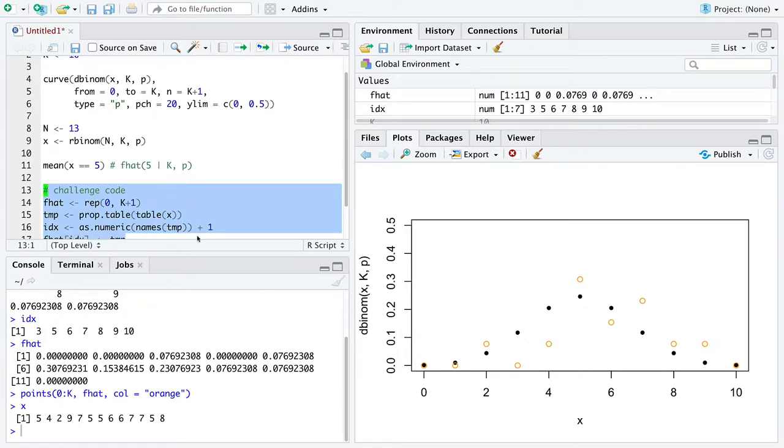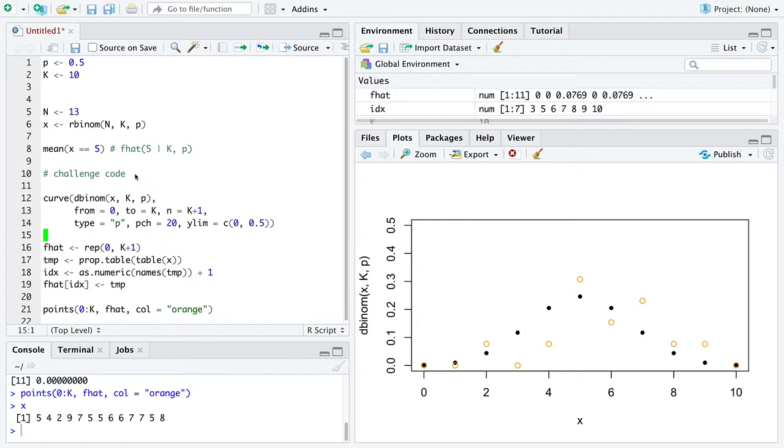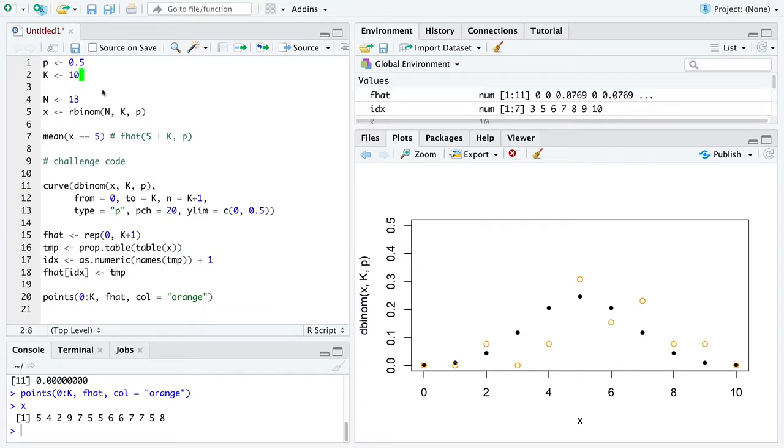I encourage you to take this code, move this code chunk to here, and now change the value of p and change the value of n, generate new data, and then make your plot all over again. Change the value of p, change the value of n, generate new data, and make your plot all the way through. As you start gaining experience with how close the estimates get to the true values, really start increasing your sample size, and see what happens to the estimates relative to the true values.